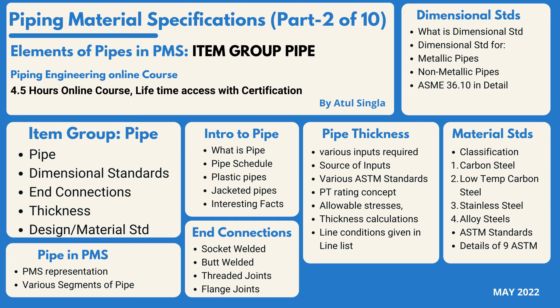The fourth section is schedule or thickness. We'll look at the various inputs to decide pipe thickness, how those inputs are received, what parameters are required, and the ASTM standards used to calculate these. We'll look at how PT rating is associated with thickness, the allowable stresses, the clauses in ASME B31.3 used to calculate pipe thickness, and we'll take an example to calculate actual thickness for a particular line. We'll also look at how to optimize pipe thickness with respect to line conditions.